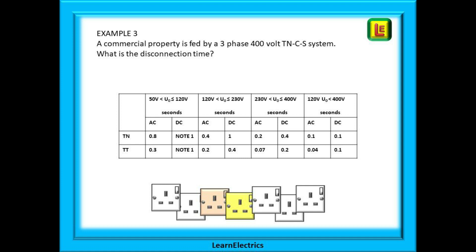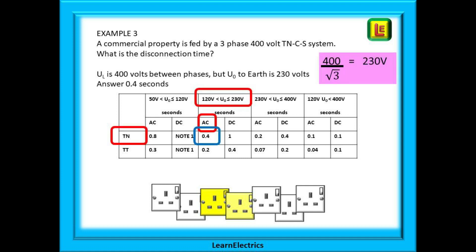Example 3 is for a commercial property fed by a three-phase 400 volt TNCS system. 400 volts is the voltage between lines, called UL not U0. U0 is calculated by dividing the line-to-line voltage of 400 volts by the square root of 3 — in other words, 400 divided by 1.732 — which gives us 230.9 volts, rounded down to 230 volts. So for a 400 volt three-phase system, U0 is 230 volts. Choose a row, choose a voltage range, and the disconnection time is 0.4 seconds.